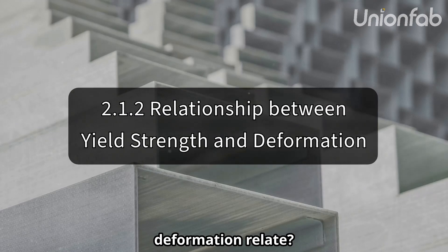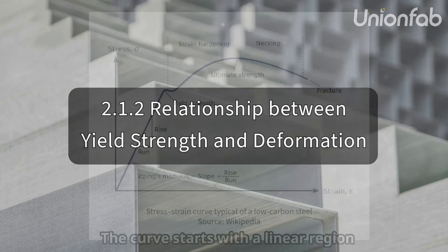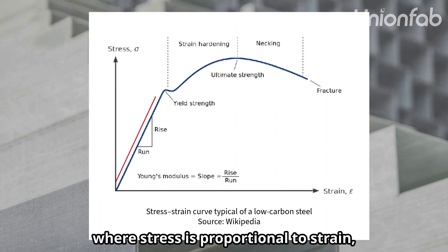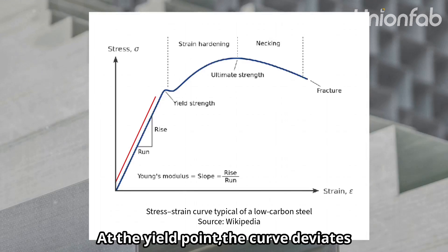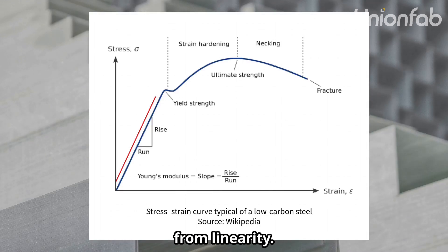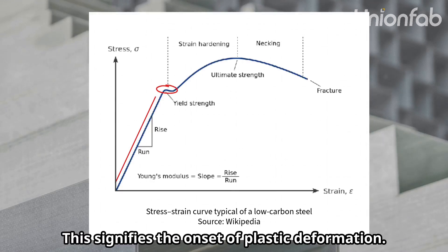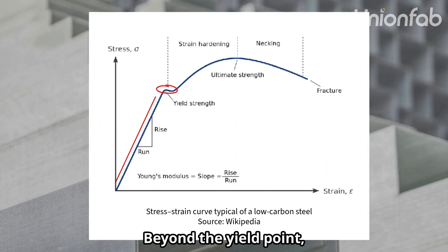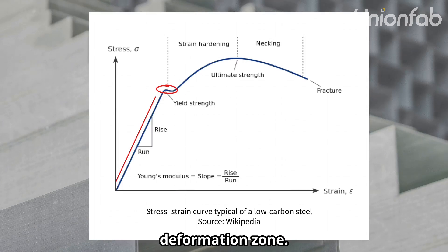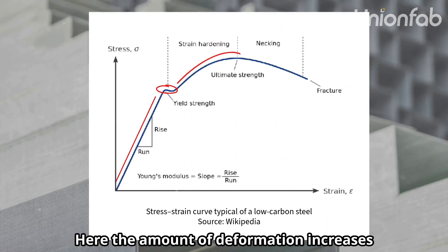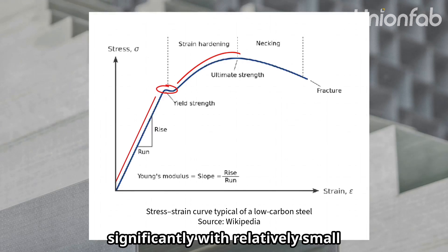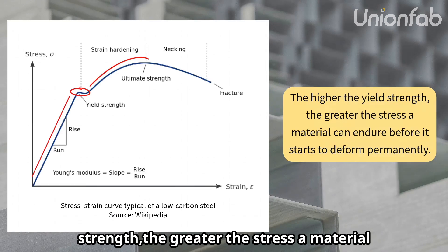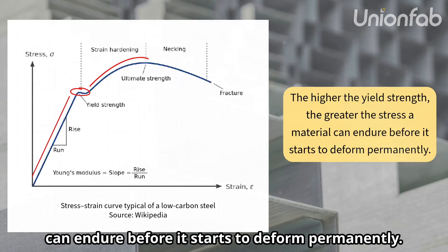How do yield strength and deformation relate? The stress-strain curve can help explain this. The curve starts with a linear region where stress is proportional to strain, or deformation. At the yield point, the curve deviates from linearity, signifying the onset of plastic deformation — the stress required to reach this point is the yield strength. Beyond the yield point, the amount of deformation increases significantly with relatively small increases in stress. Essentially, the higher the yield strength, the greater the stress a material can endure before it starts to deform permanently.